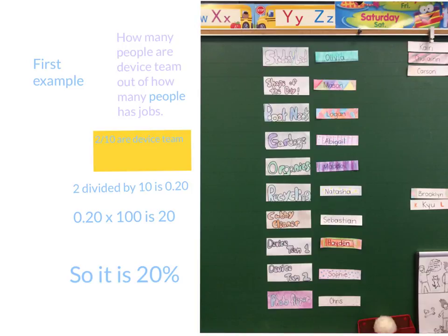So this is the first example. How many people are on the device team, no matter how many people has jobs? Ten people has jobs, and two out of ten people has device team. So it's two out of ten when you change it to a fraction.